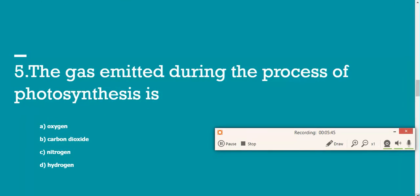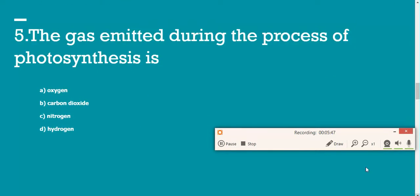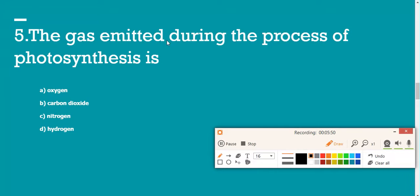Next question, number five. The gas emitted during the process of photosynthesis. You have to pay attention here - what is the gas emitted? During photosynthesis, the plants intake carbon dioxide, so that's a reactant. As a product though, oxygen is released. Be careful - there's carbon dioxide and oxygen as well. But carbon dioxide is not the answer for this question because we are looking for the gas which is being emitted, which is oxygen. So there you go, you have your answer, option A.